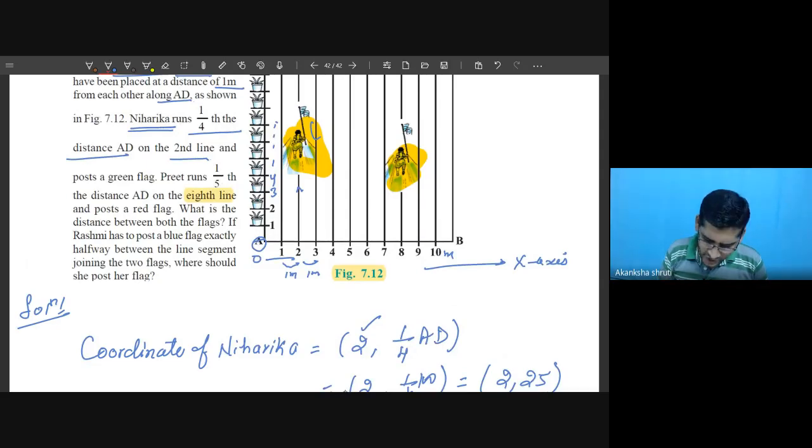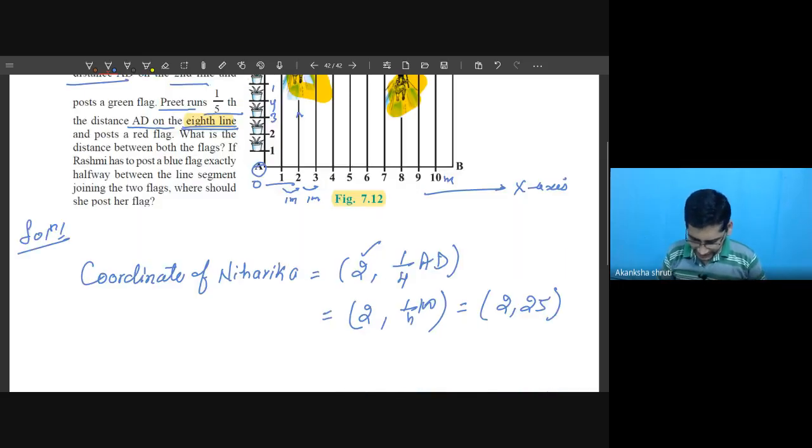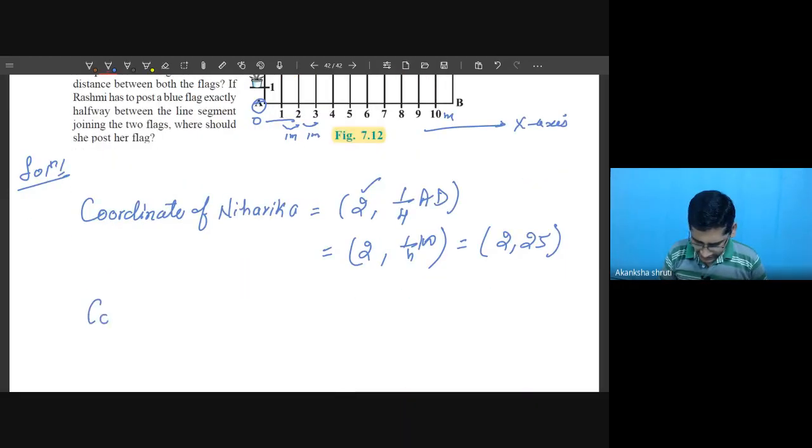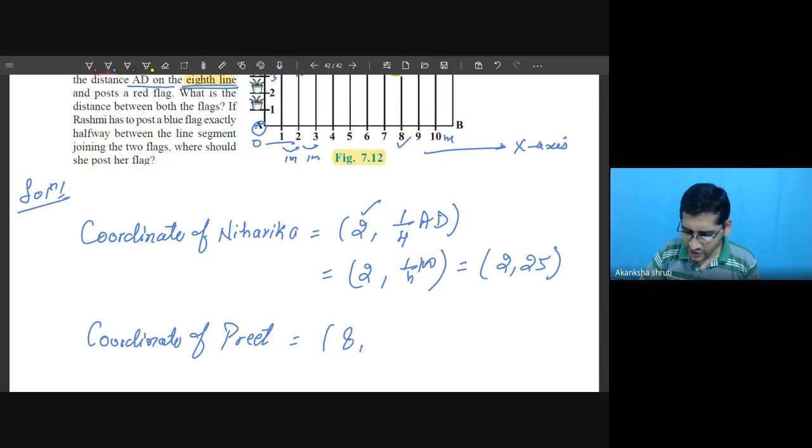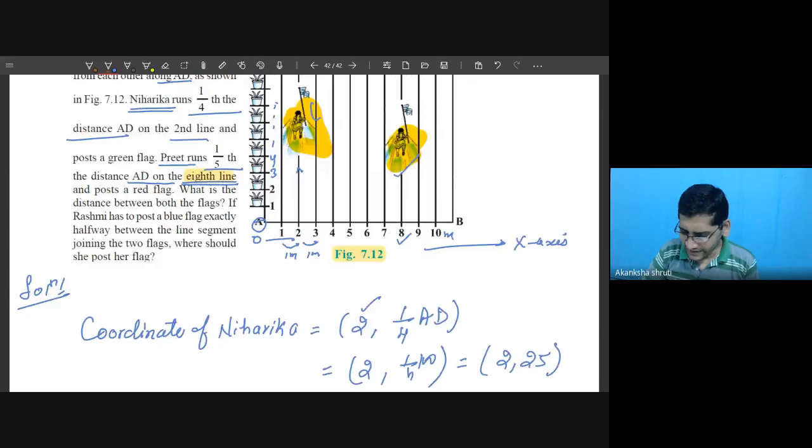Now the next student Preet runs one-fifth the distance AD on eighth line. So you may get the coordinate of Preet, it is running on the eighth line, so x coordinate is 8.